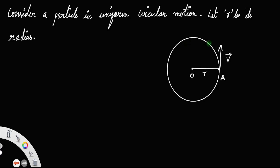Now, after some time, let the position of the particle be at the point B. Again, the velocity — this is the radius of the path — the velocity will be like this. Always remember, the velocity vector is always perpendicular to its radius. So OA is perpendicular to vector V at A, and similarly OB is perpendicular to vector V at B.